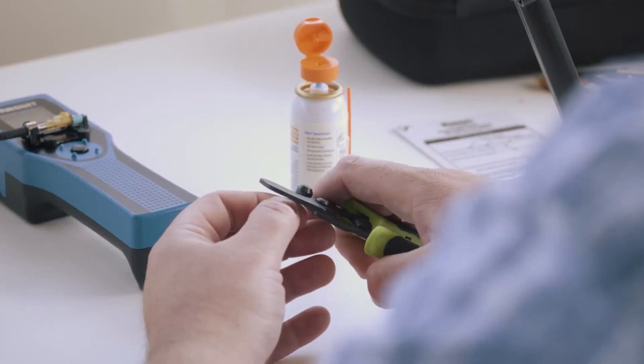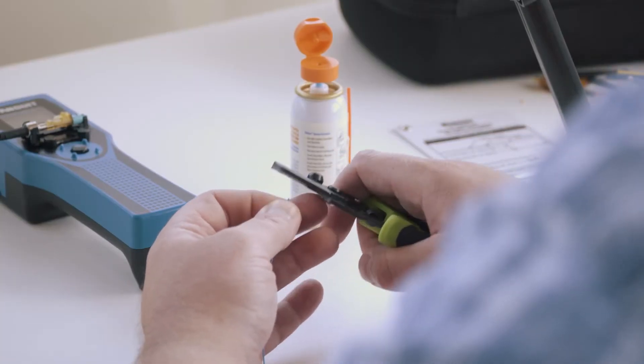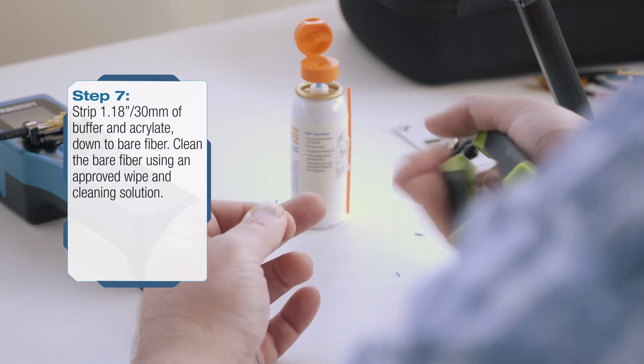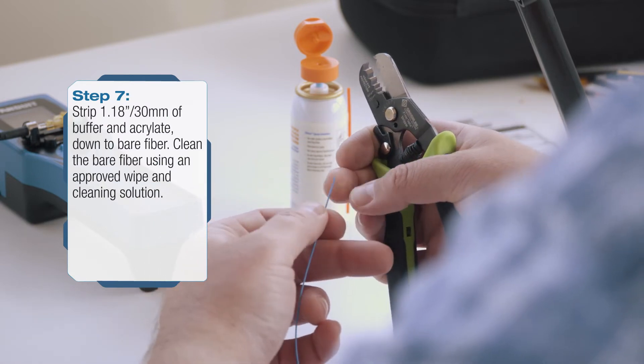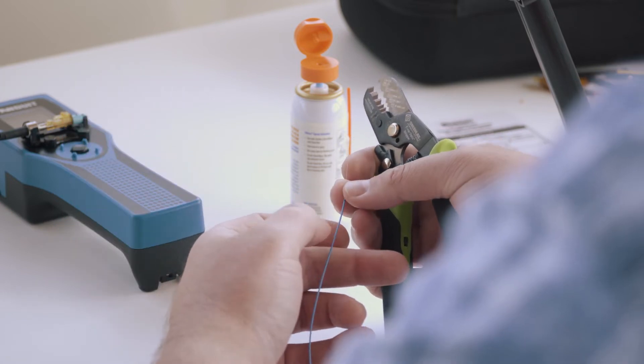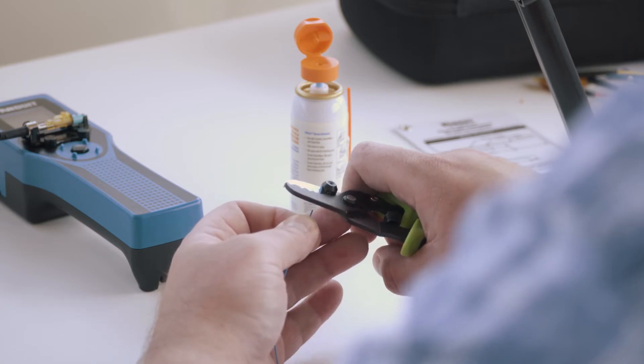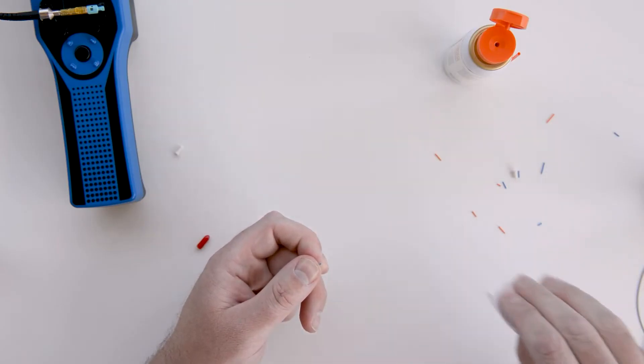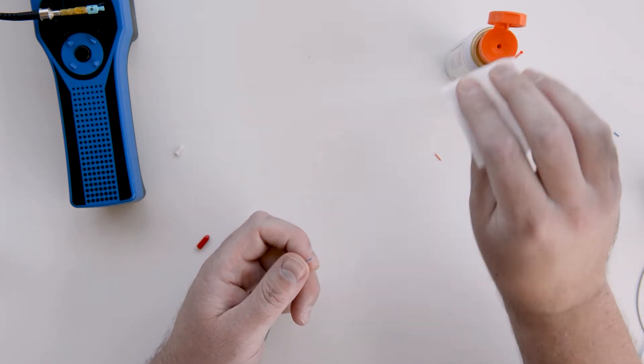In short increments, strip the buffer and acrylate down to bare fiber all the way to the strip mark on the buffer. Next, use an approved wipe and cleaning solution to clean any dust, residue, or debris from the bare fiber.